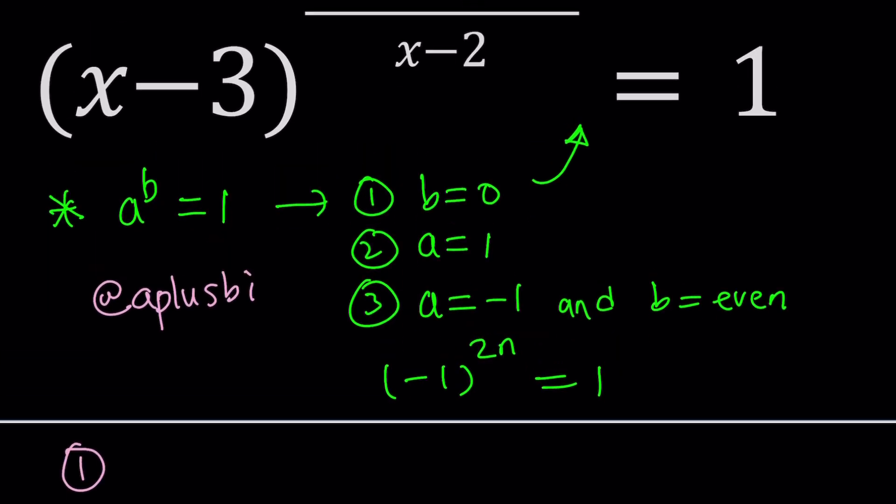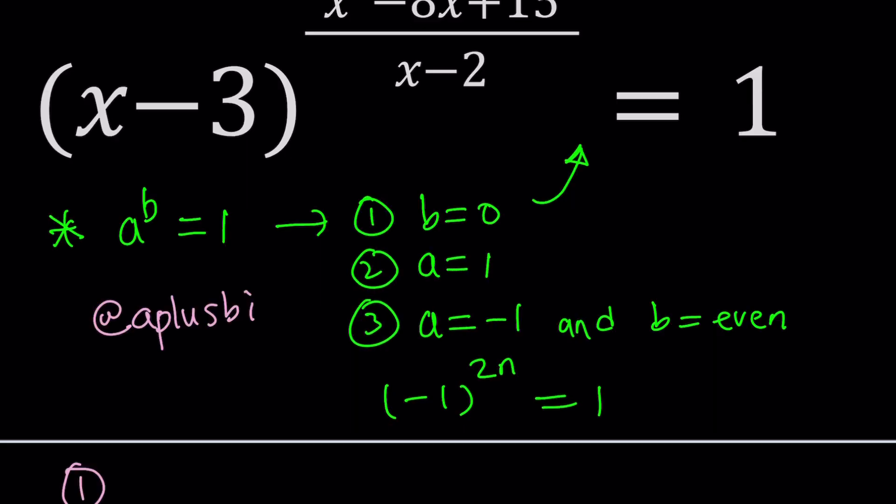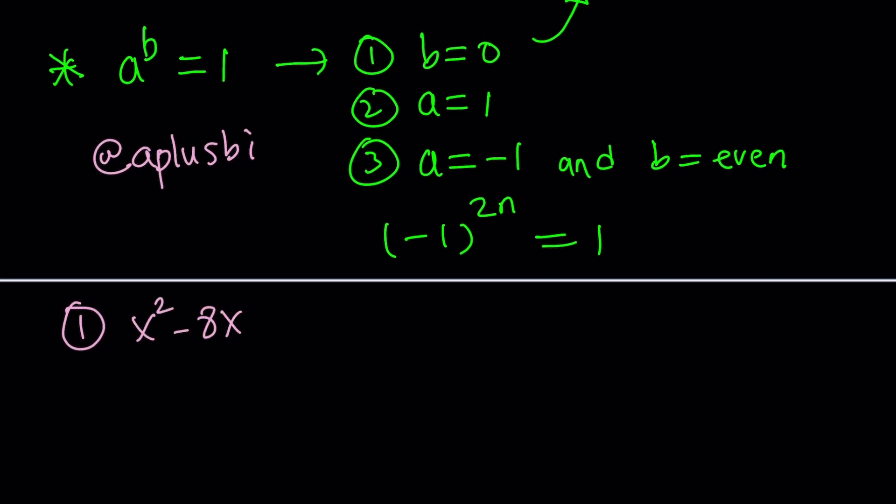So first case is b equals 0. b is the exponent. So we want x²-8x+15 divided by x-2 to be 0. What does that mean? If a fraction is 0, then the denominator should not be 0 and the numerator should be 0. You have to satisfy two conditions.